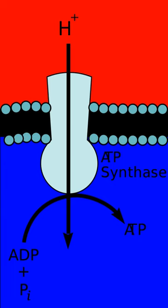In prokaryotes the situation is more complicated, because there are several different electron donors and several different electron acceptors. Electrons can enter the chain at three levels: at the level of a dehydrogenase, at the level of the quinone pool, or at the level of a mobile cytochrome electron carrier. These levels correspond to successively more positive redox potentials, or to successively decreased potential differences relative to the terminal electron acceptor — in other words, to successively smaller Gibbs free energy changes for the overall redox reaction donor to acceptor.